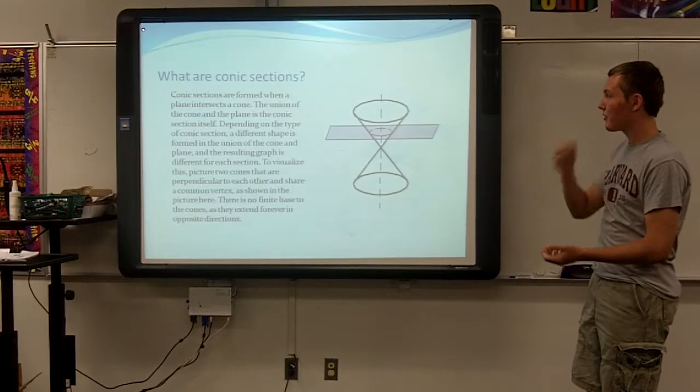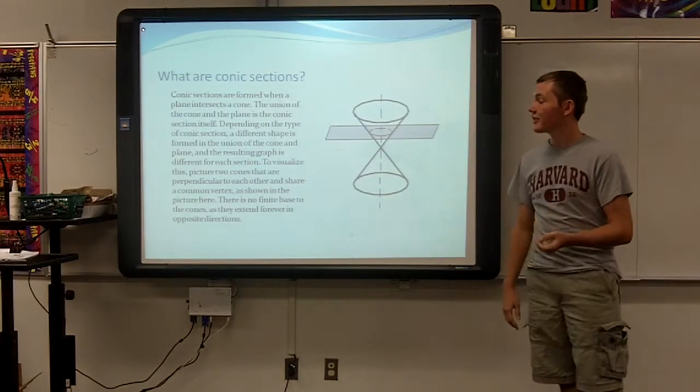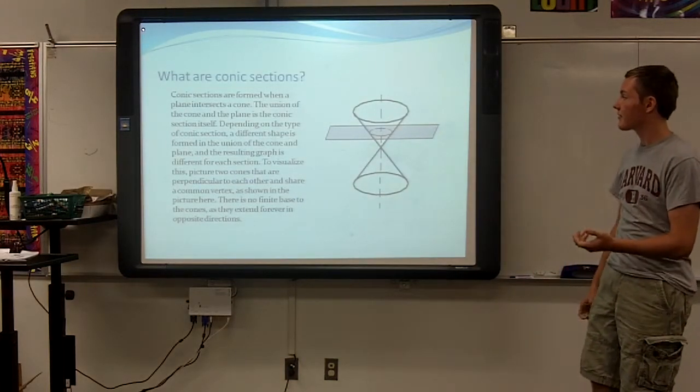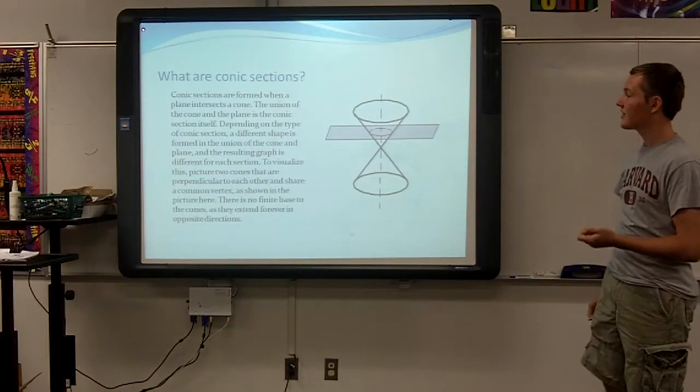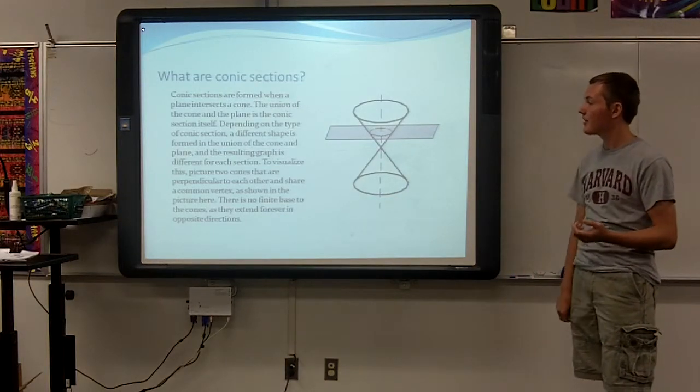Conic sections are formed when a plane intersects a cone. The union of the cone to the plane is the conic section itself. Depending on the type of conic section, a different shape is formed in the union of the cone and the plane.